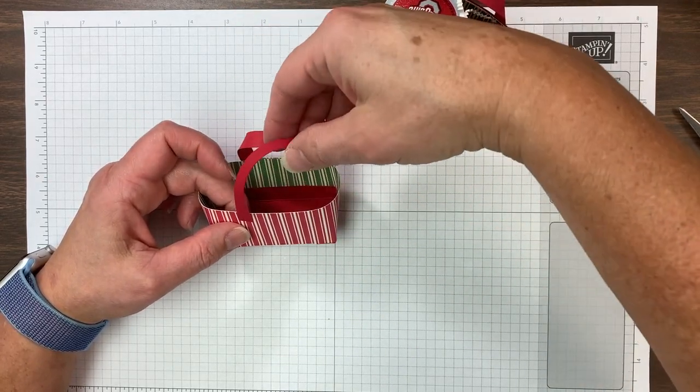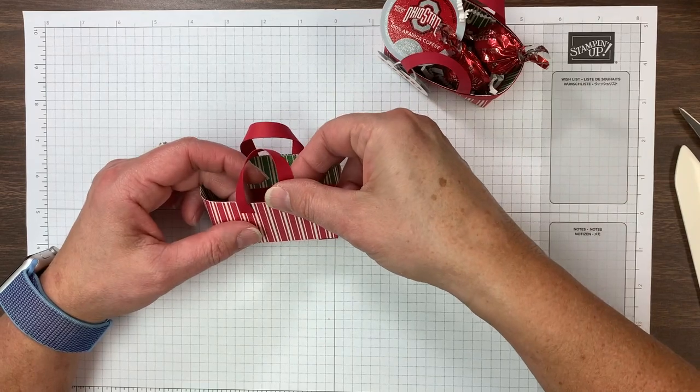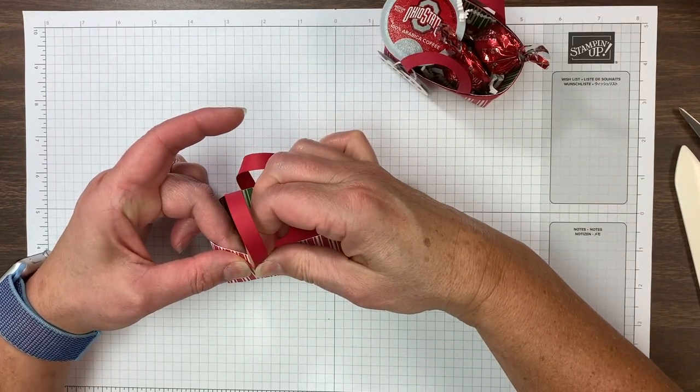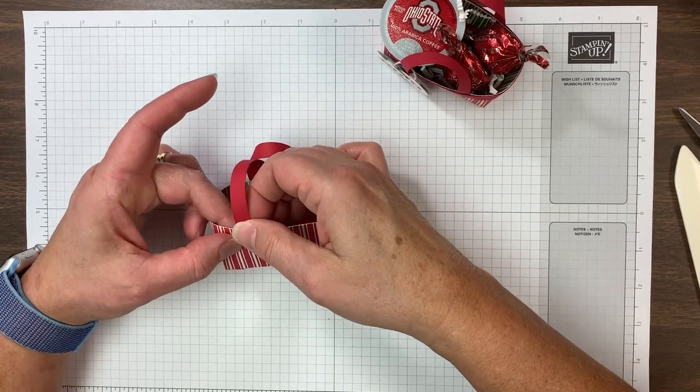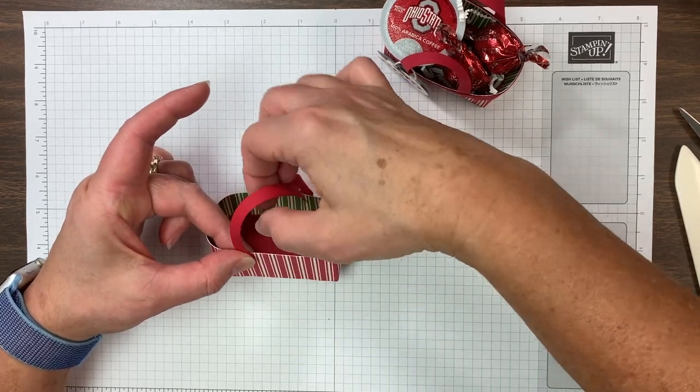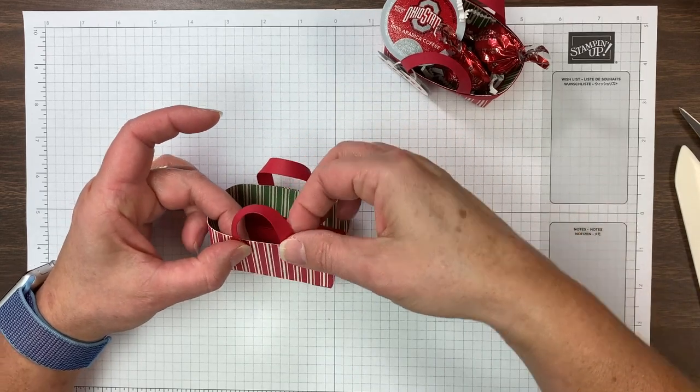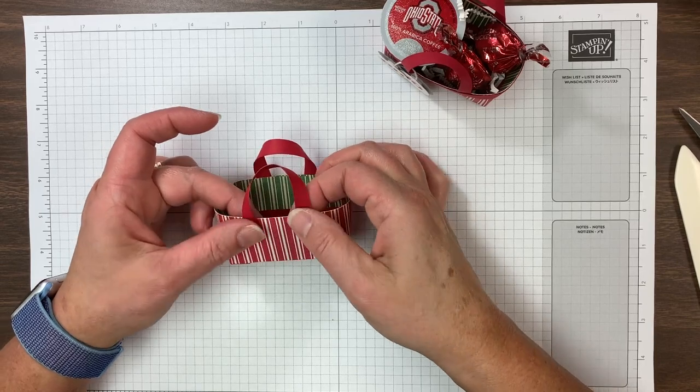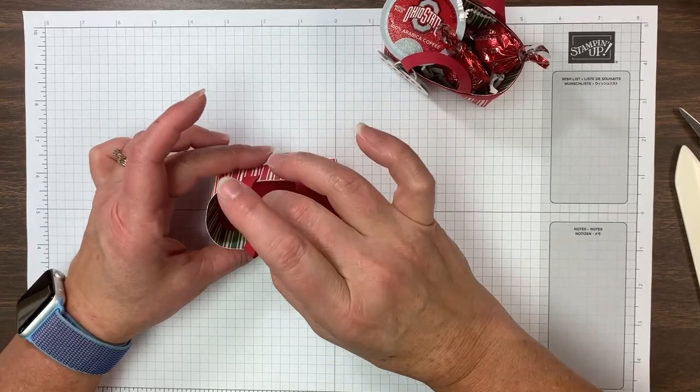All right, so I'm just doing the other side kind of to match. I may have started not quite far enough out there. If you make a little bit of a mess on this rim, that's okay. You're going to cover it. But that looks good. Those look pretty even.